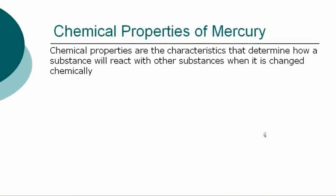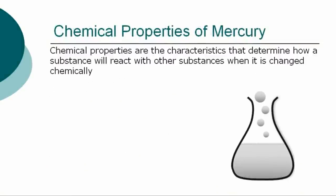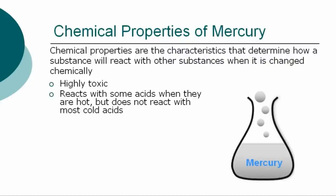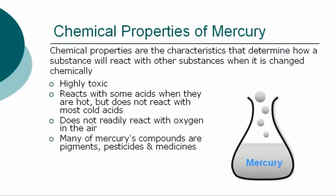The chemical properties are the characteristics that determine how mercury will react with other substances when it is changed chemically. The chemical properties of mercury are: it is highly toxic; it reacts with some acids when they are hot, but does not react with most cold acids; it does not readily react with oxygen in the air; and many of mercury's compounds are pigments, pesticides, and medicines.